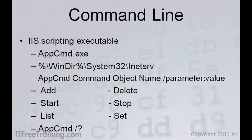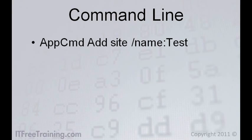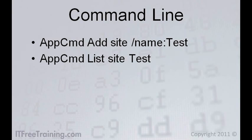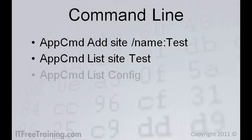Let's have a look at a few examples. If you want to add a new site, use the add command followed by the site and then the parameter name with the site name. Once your site is added, you can list it with the list command. If you want to view the current configuration file, you can use the command list config. The appcmd executable also allows you to stop and start websites — for example, if you want to stop the default website, you could use the following command.